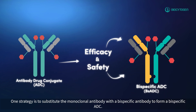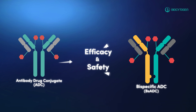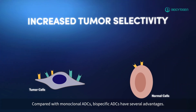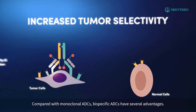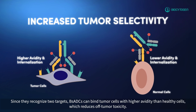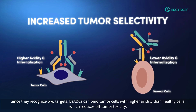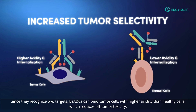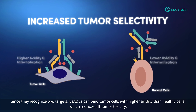One strategy is to substitute the monoclonal antibody with a bispecific antibody to form a bispecific ADC. Compared with monoclonal ADCs, bispecific ADCs have several advantages. Since they recognize two targets, bispecific ADCs can bind tumor cells with higher avidity than healthy cells, which reduces off-tumor toxicity.